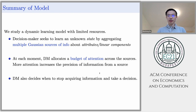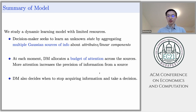In our model, there is a decision maker who wants to learn an unknown state by aggregating different Gaussian sources of information about attributes that contribute linearly to the state. At each moment in time, the decision maker has a budget of attention to allocate across the sources, and more attention means more precision of information from that source.